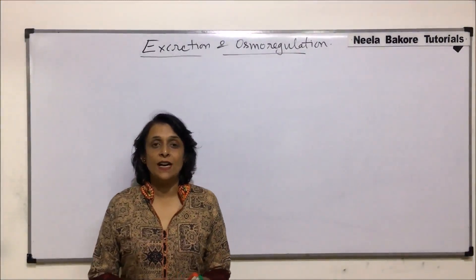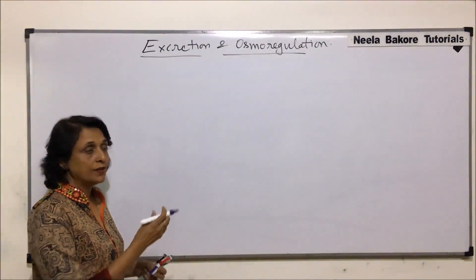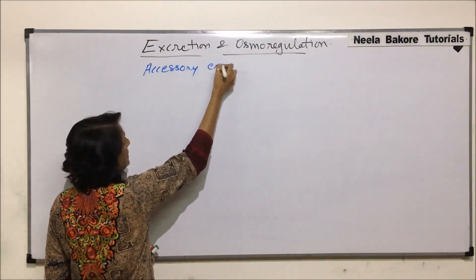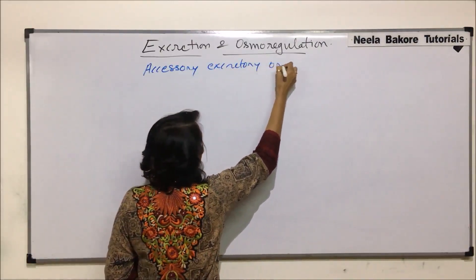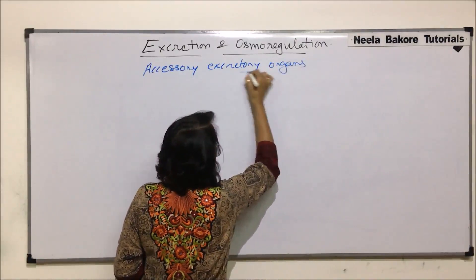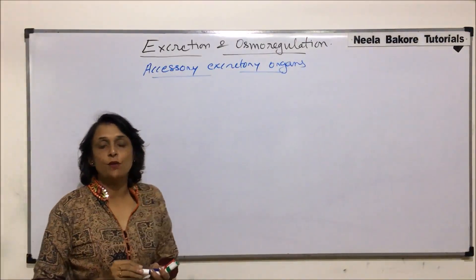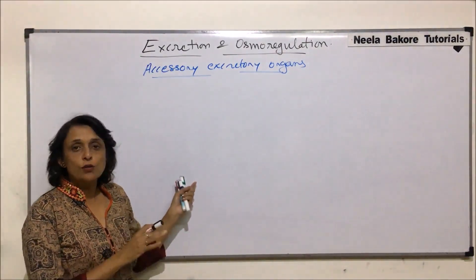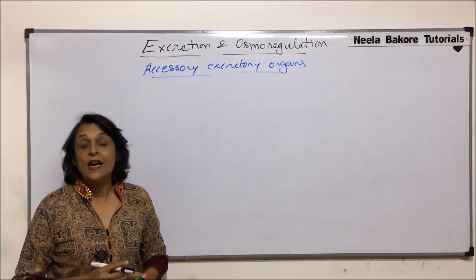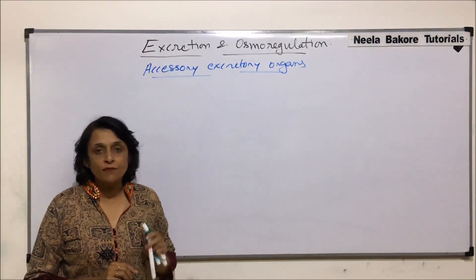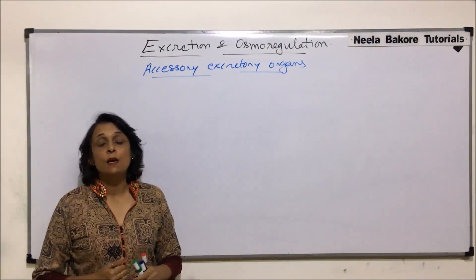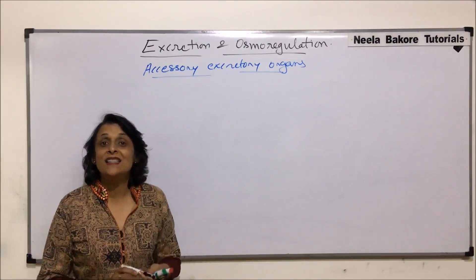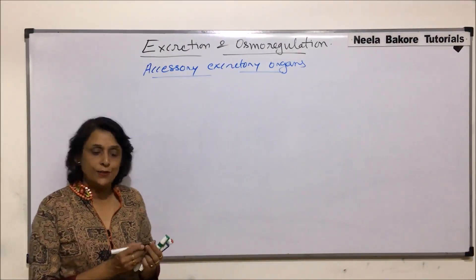In this part, we will talk about accessory excretory organs in humans. We have seen the functioning of the main excretory organ, that is kidney, and the complete excretory system. Now, we would take up all those organs which are helping in excretion. Excretion is not their main function — their main function is something else. But because they help in removal of certain waste from the body, they are considered as accessory or helping excretory organs.